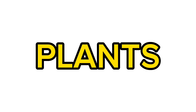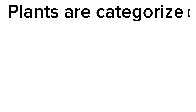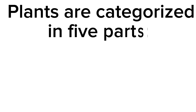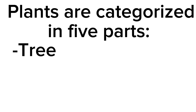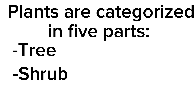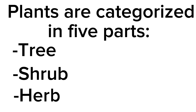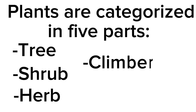Plants are categorized in five parts: tree, shrub, herb, climber, and thorny.